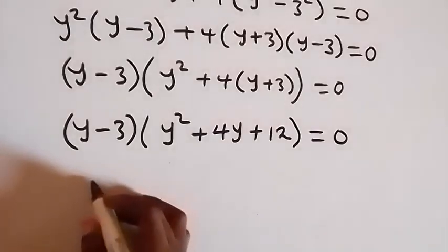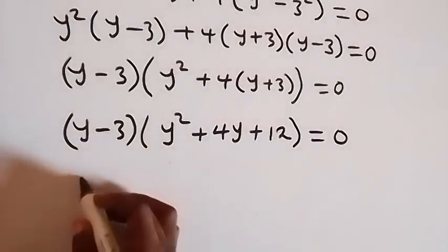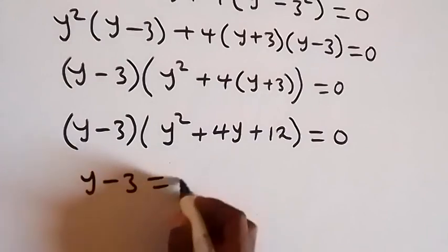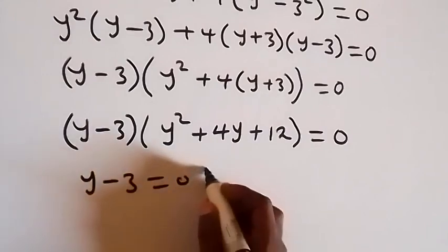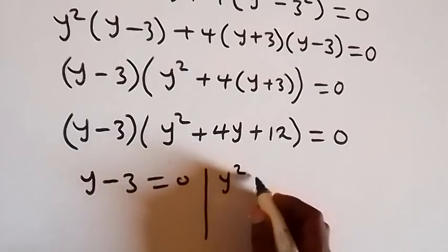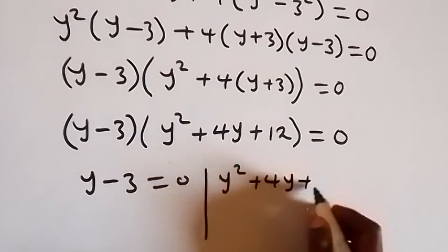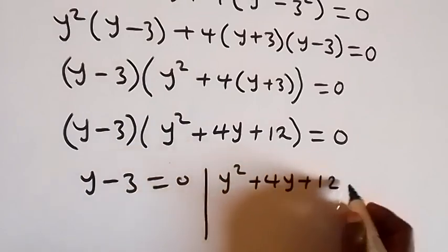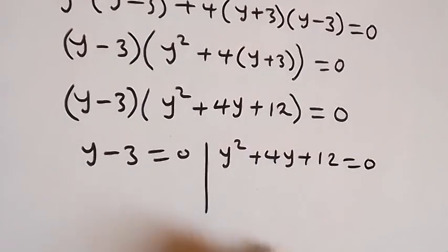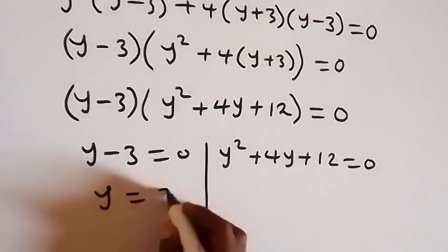Then here we have two cases. The first: y minus 3 equals to 0. Or we have y squared plus 4y plus 12 equals to 0. And on the first case, y is equal to 3.